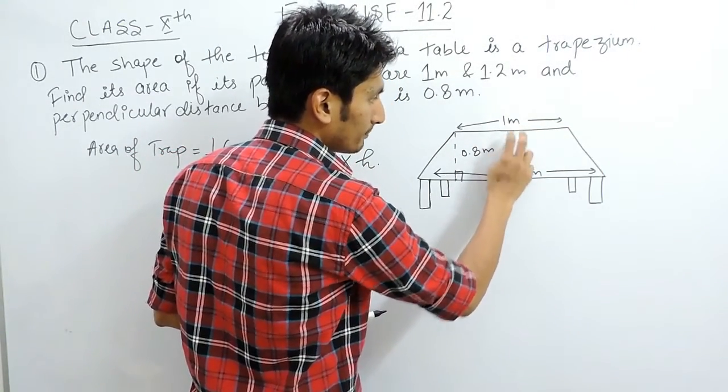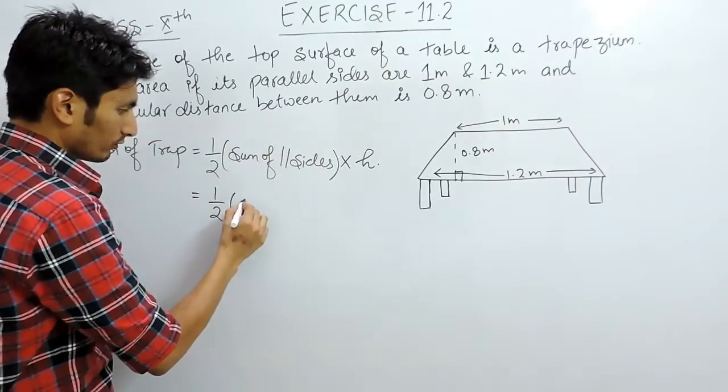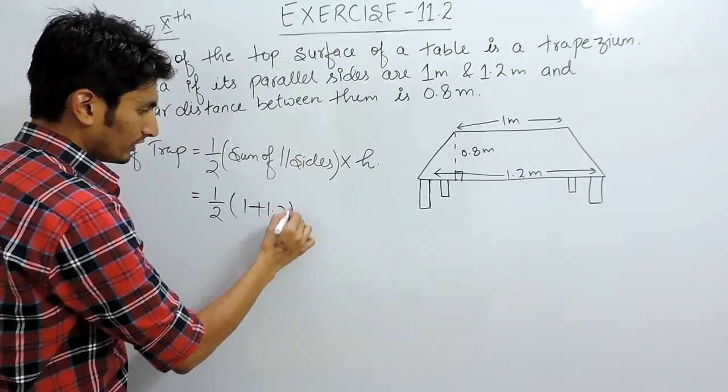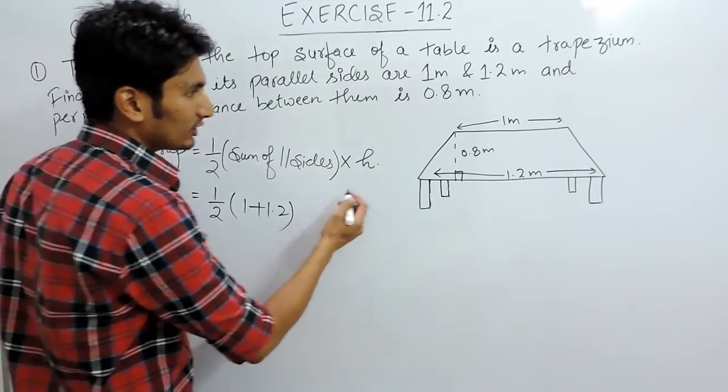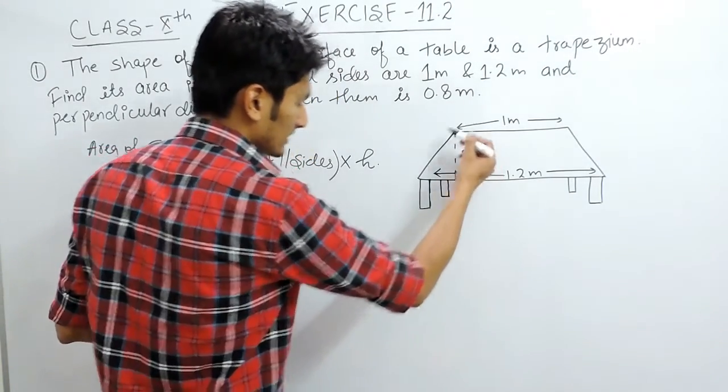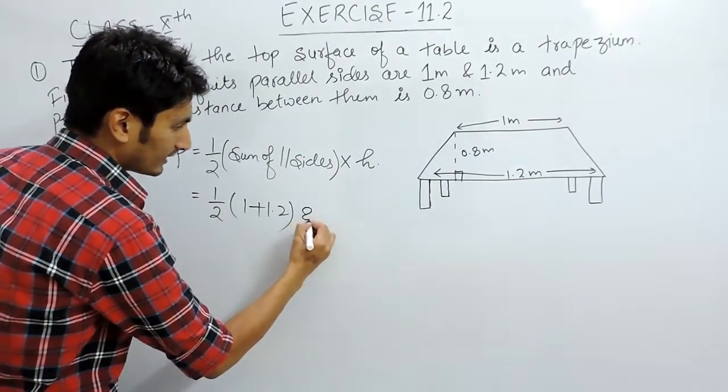The sum will be 1 plus 1.2, so 1 plus 1.2 will be the sum of parallel sides into the perpendicular distance which is 0.8.